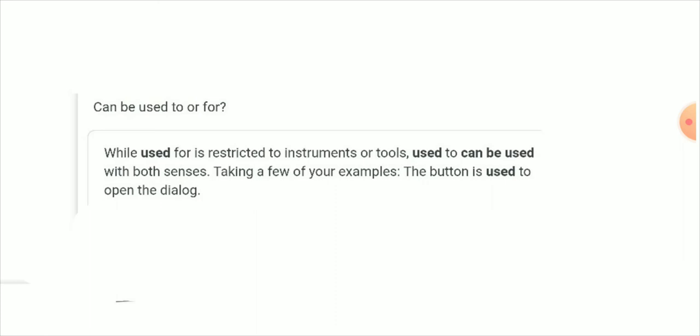Conjunctions can be used to or for. While used for is restricted to instruments or tools, used to can be used with both senses. Taking a few examples, the button is used for, or the button is used to open the dialogue.